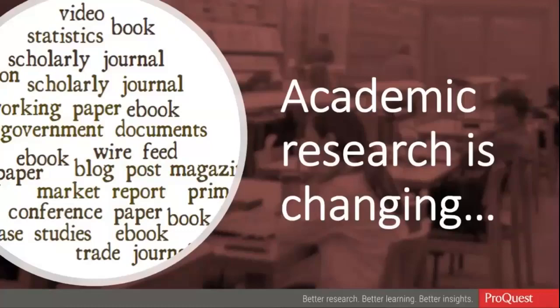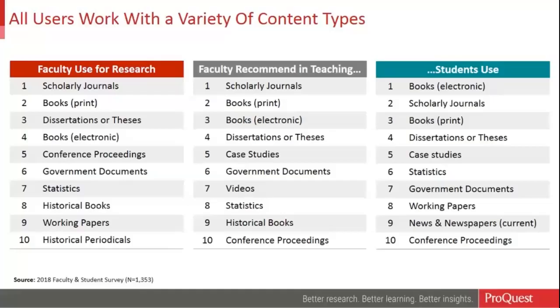The volume of content available can be quite overwhelming to students and faculty, the speed at which information is being published, the formats in which it's being shared — all creating a lot of change in the research space. We do a lot of research at ProQuest to try to understand how to get out in front of that change, and one of the recent pieces of research we did was trying to understand the critical mass of content available and what the future demand for different content types looks like.